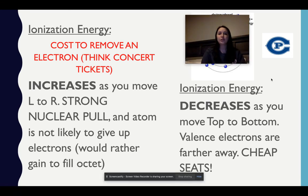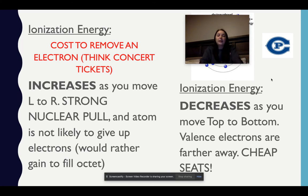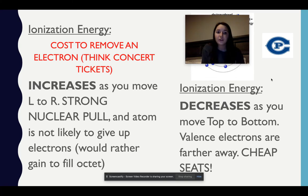Ionization energy is the cost to remove an electron. Think about concert tickets — it's a little bit easier to relate it to something you know. Ionization energy increases as you move left to right because I have a strong nuclear pull. I have that strong positive center, so the atom is not likely to give up electrons. They would rather gain to fill their octets, so they want to hold on to their electrons because there are more positives holding them in.